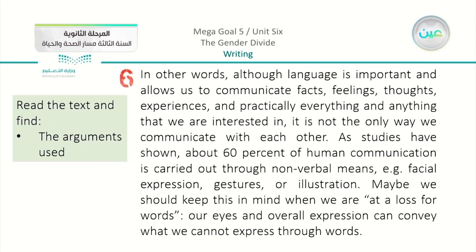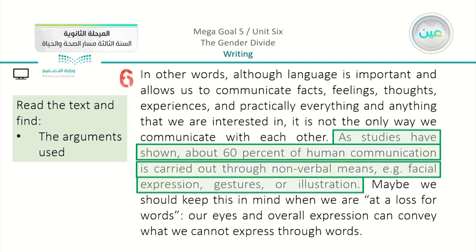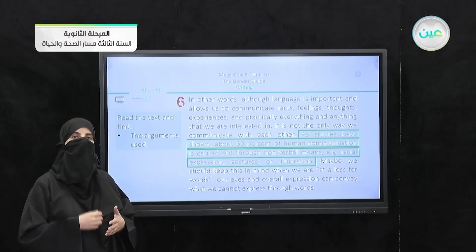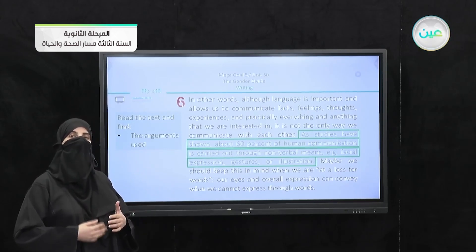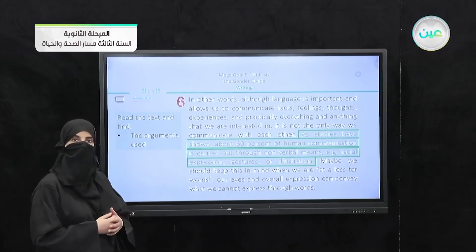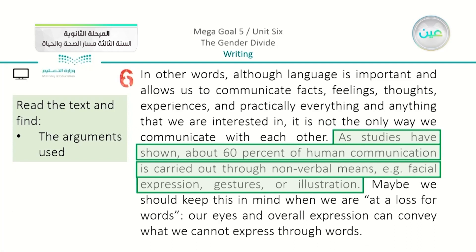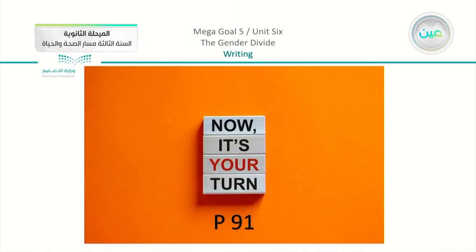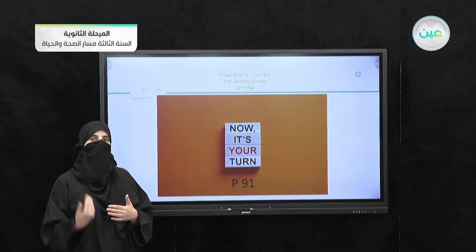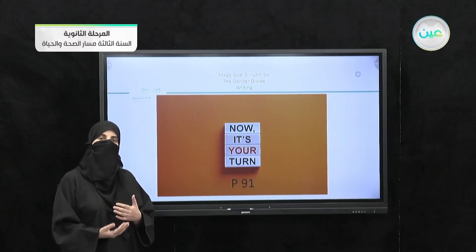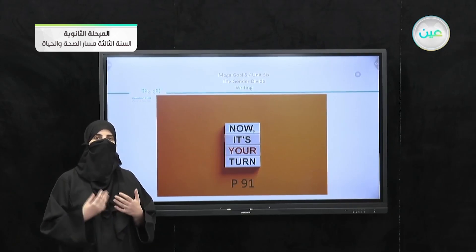In paragraph six, the argument is: 'As studies have shown, about 60 percent of human communication is carried out through nonverbal means — for example, facial expressions, gestures, or illustration.' This is a very strong argument because it is based on studies. So the passage overall is about verbal and nonverbal communication and how people understand each other even without speaking.